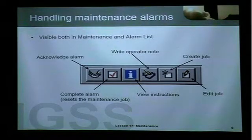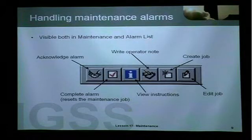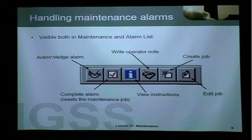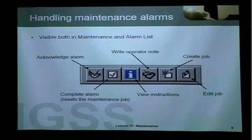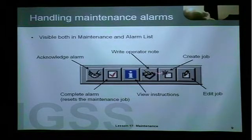When the operator sees a maintenance alarm, he can see it both in the maintenance and alarm list. The first thing he will do, just as with a normal alarm, is acknowledge the alarm — he can do this from either list. When he has done the physical maintenance job, he will go into the maintenance list and complete the alarm, which will reset the maintenance interval. If he wants to view instructions, he will click the info icon in the toolbar. He can also write an operator note. The person with the appropriate rights can also create or edit a maintenance job.